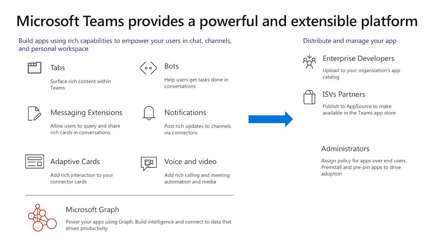Voice and video allows you to build bots that let users interact with your applications using voice and video. Microsoft Graph has a lot of APIs available for Teams as well. You can use those APIs to create Teams, add channels, modify channels, add users, and so on.